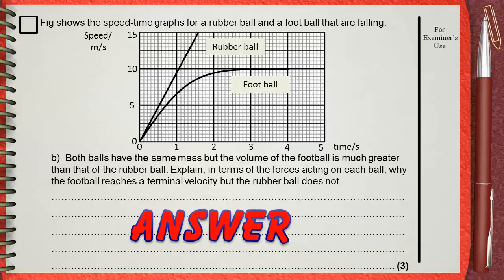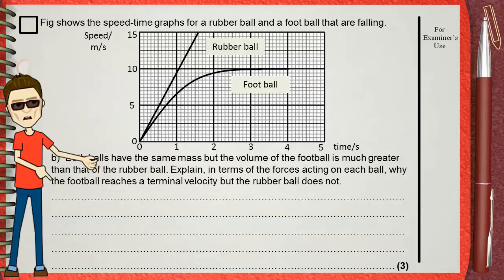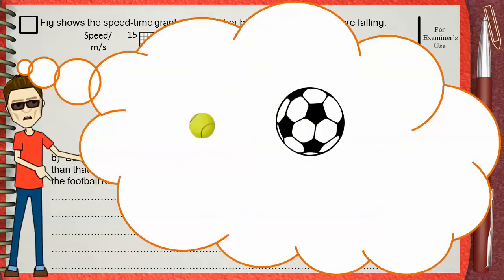This is the football and this is the rubber ball. The question says that they have the same mass, so they will have the same force of gravity, or you can say the weight. Terminal velocity is reached when the weight downwards, or the force of gravity downwards, equals the drag force or the air resistance upwards.